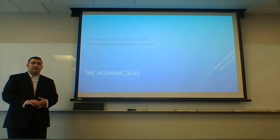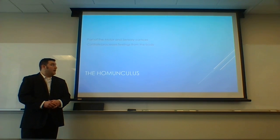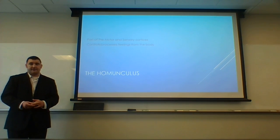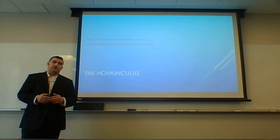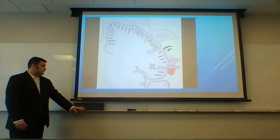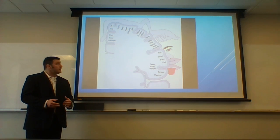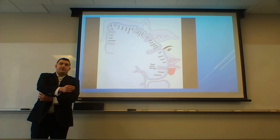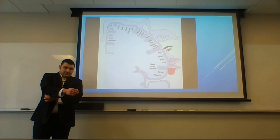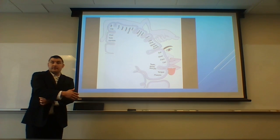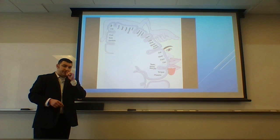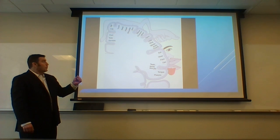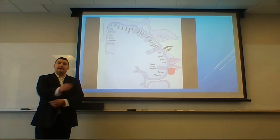If we look at our motor and sensory cortices, they are made of a section called the homunculus, which controls the cells and different parts of our body. Here is a chart representing the number of cells dedicated to each part of the body. If you squeeze your elbow really hard right now, you'd hardly feel anything. But if you take the same pressure and squeeze your lower lip, it's extremely painful — because there are more neurons dedicated to your face and lip than to your elbow.